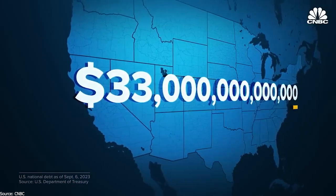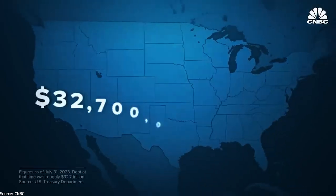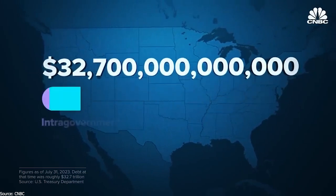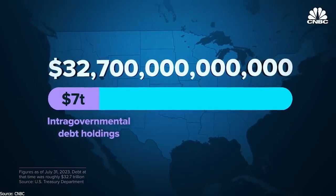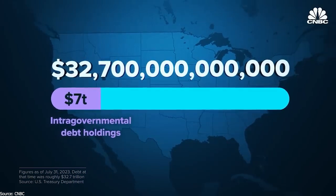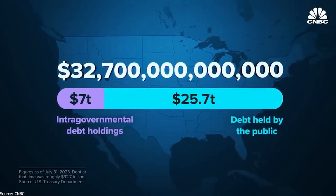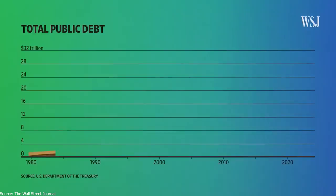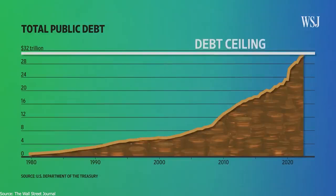Nearly $33 trillion — that's what the U.S. national debt was as of early September 2023. At the end of July 2023, when the debt was about $300 billion less, roughly $7 trillion of that was intra-governmental debt holdings, meaning the government owes itself that money. The majority of the debt — about $25.7 trillion — was held by the public.